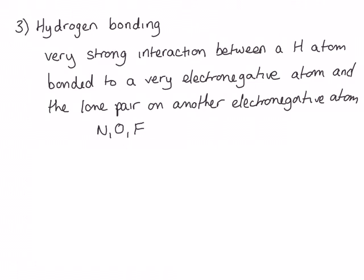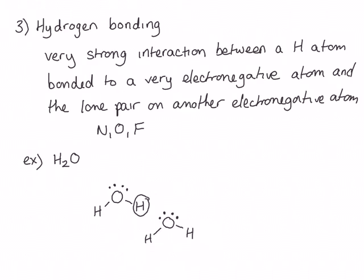The hydrogen must be bonded to nitrogen, oxygen, or fluorine, and the interaction is with a lone pair on another nitrogen, oxygen, or fluorine. Water is an example of a molecule that exhibits hydrogen bonding. Water has both hydrogens attached to an electronegative atom (oxygen) and lone pairs on that same electronegative atom. Hydrogen bonding forms between the hydrogen on one water molecule and the lone pair on the oxygen of another water molecule.